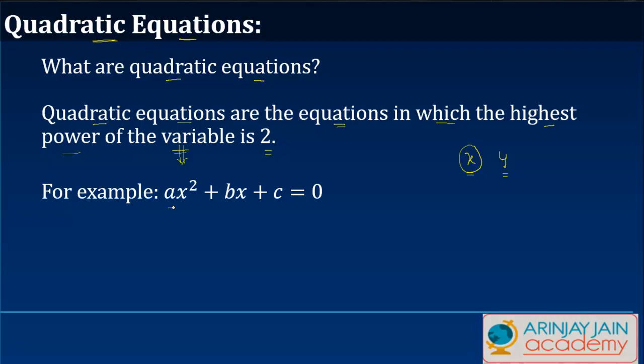So in a standard form if you have ax squared plus bx plus c where c is a constant and a and b are also constant, then the variable is x. If you see the highest power of the variable in this equation is 2.